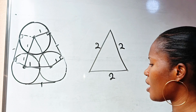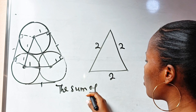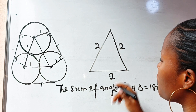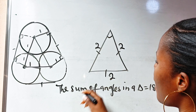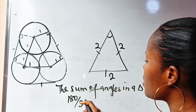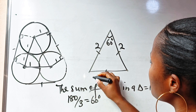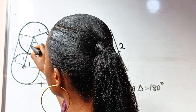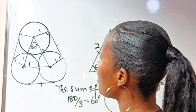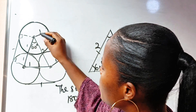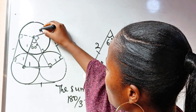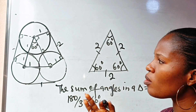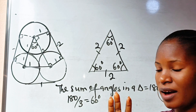We have an equilateral triangle with all sides equal to 2. The sum of angles in a triangle is 180 degrees, so each angle is 180 ÷ 3 = 60 degrees. So we have 60 degrees at each vertex. Because we have a right angle at each tangent point and the opposite sides are equal, a rectangle is formed, and the straight segment x is also equal to 2.